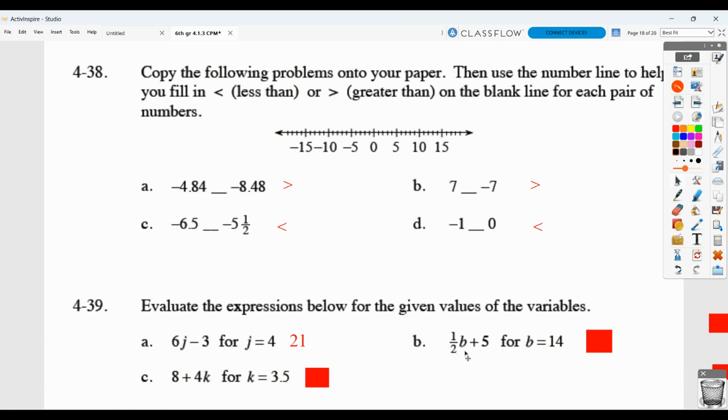Here it's 1 half of b. So 1 half of 14 plus 5. Half of 14 is 7. 7 plus 5 is 12. Again, have some work shown. Here we're taking 8 plus 4 times the value of k. So 4 times the value of k is 4 times 3 and 5 tenths. And then you're going to add 8 to that.